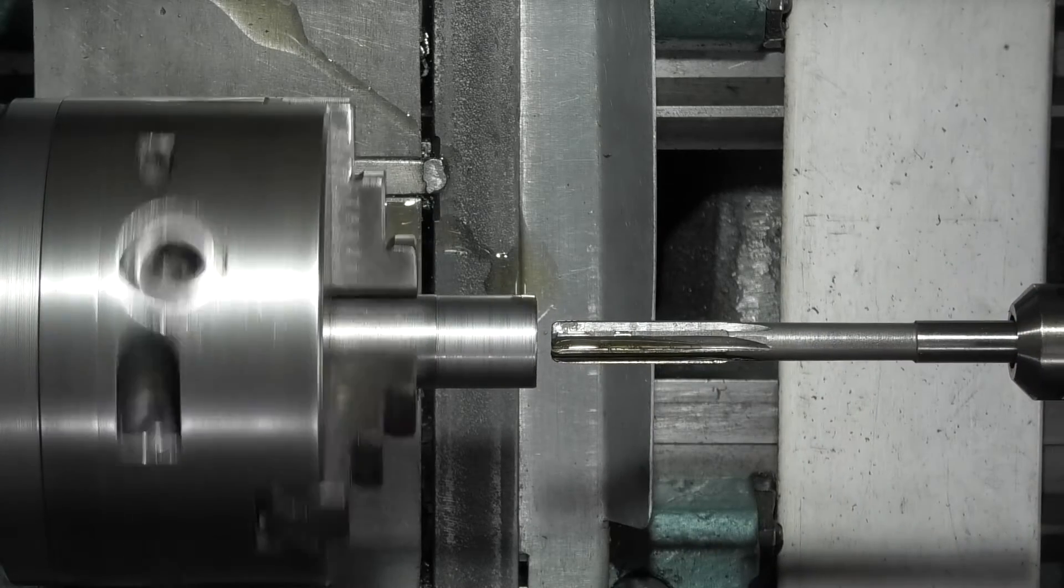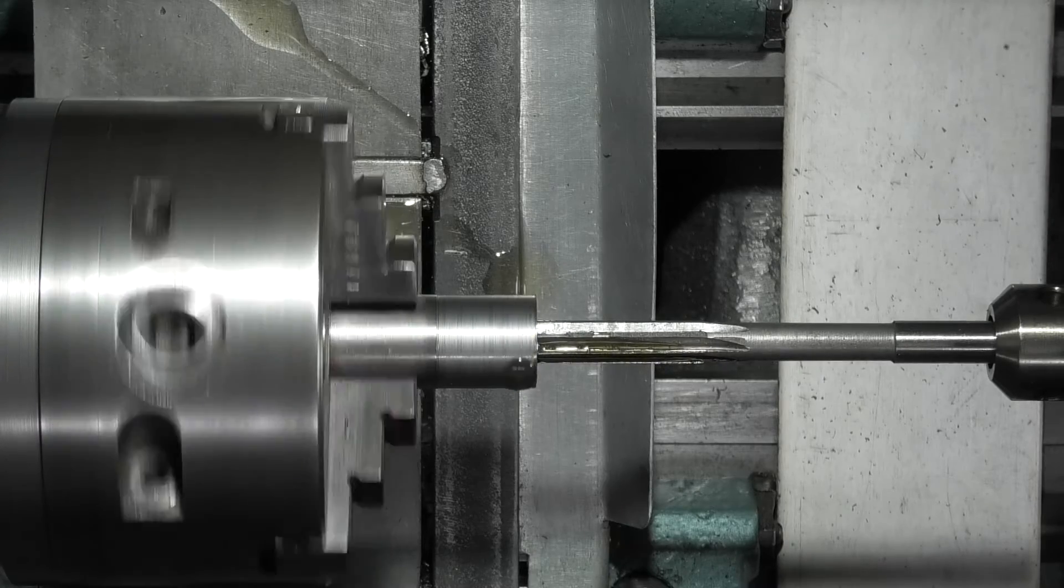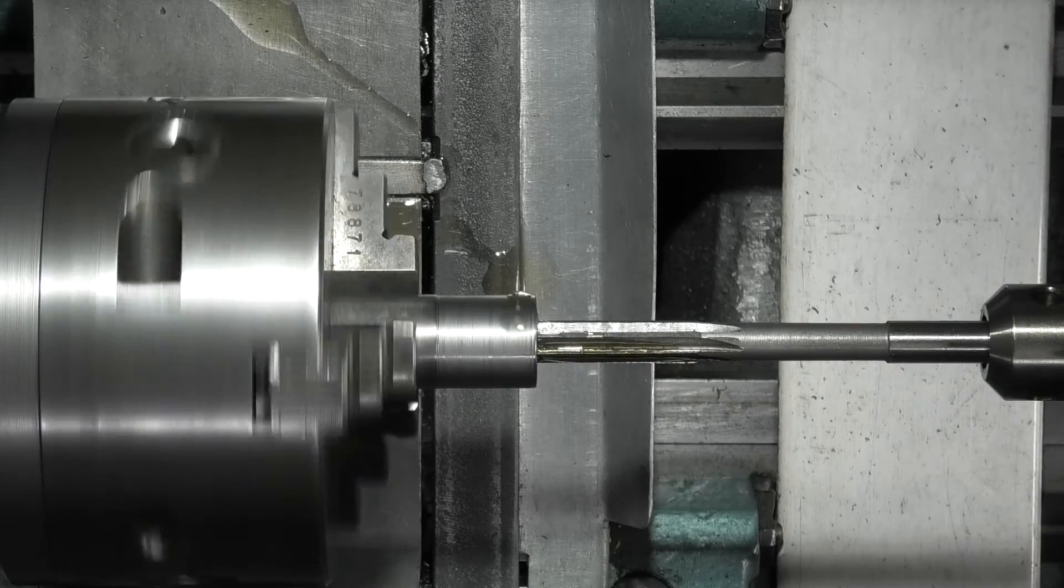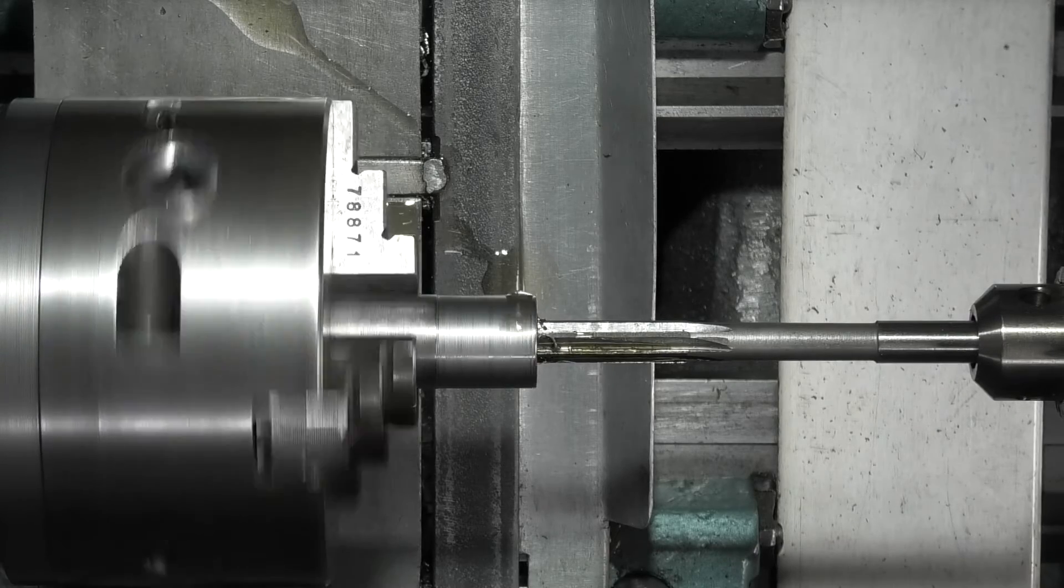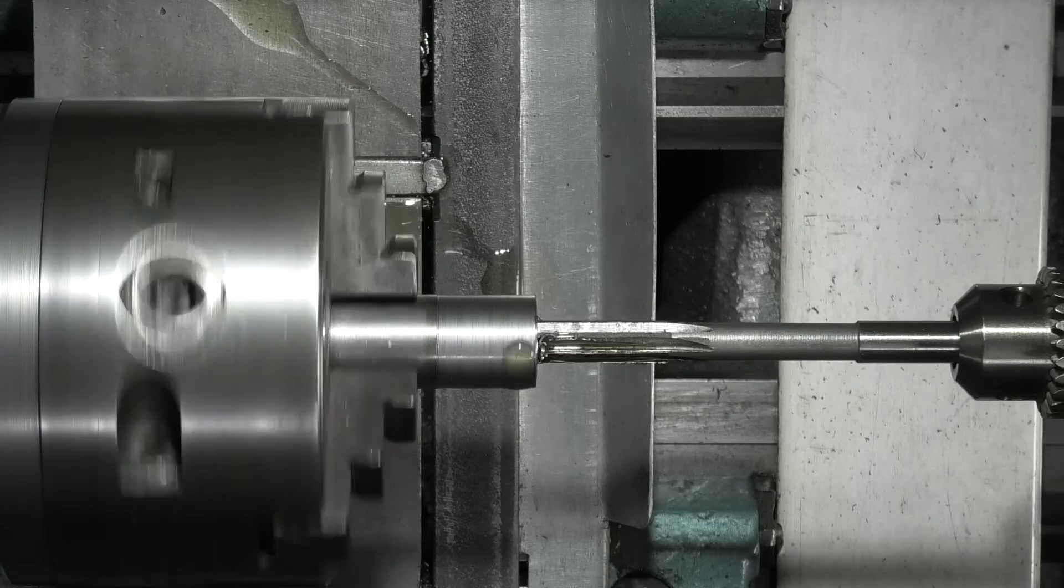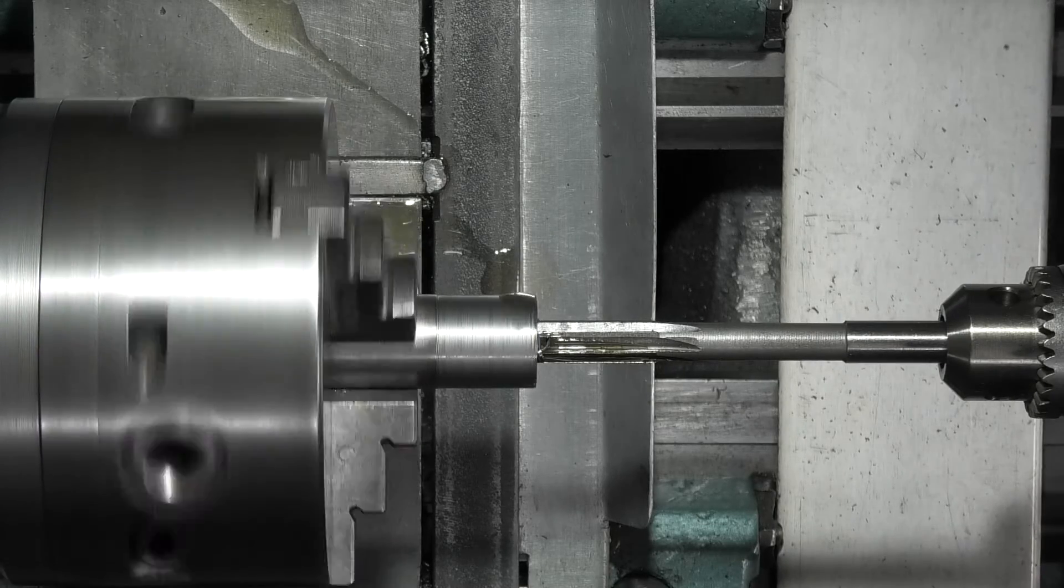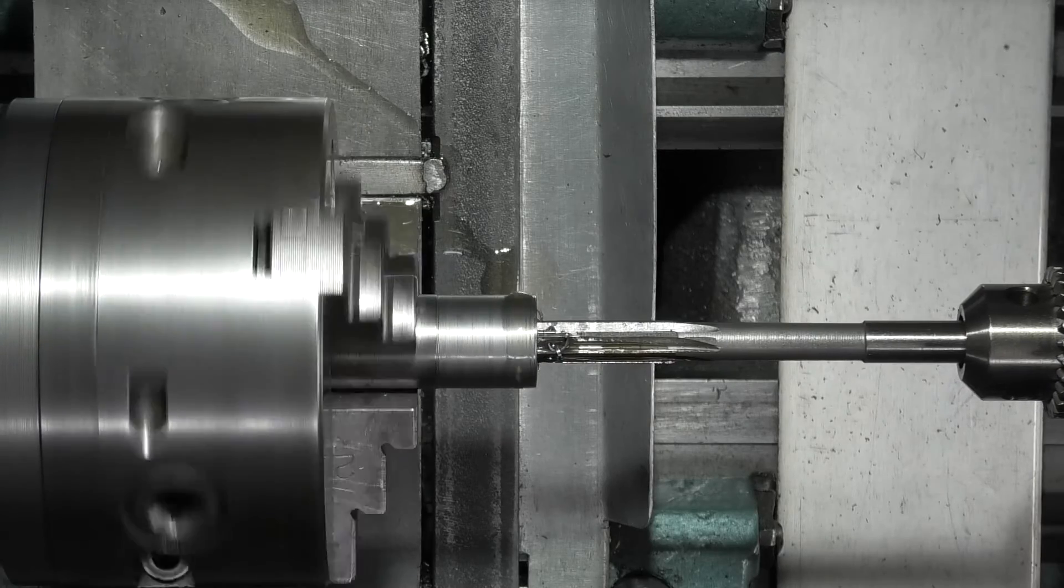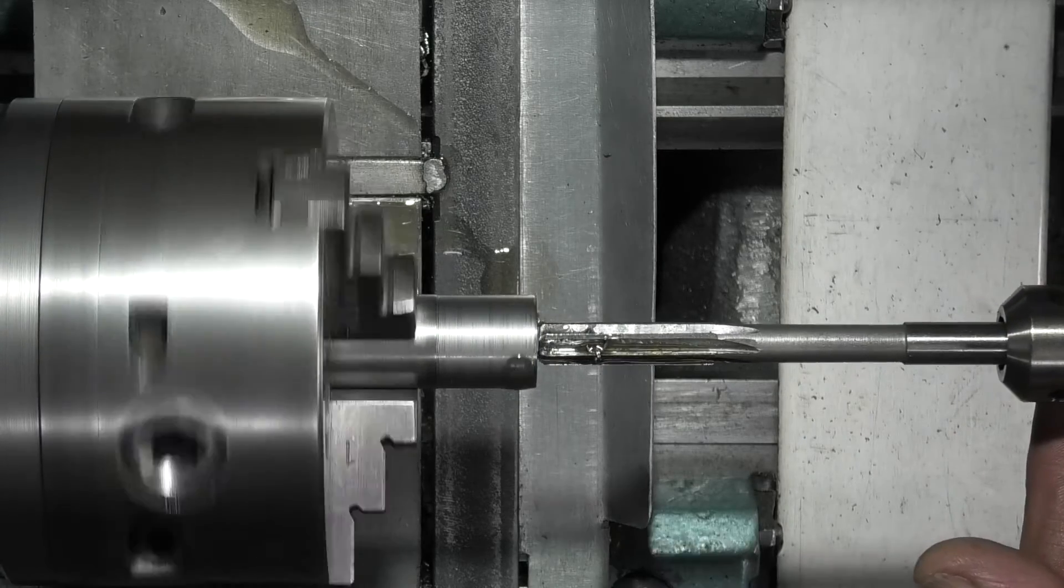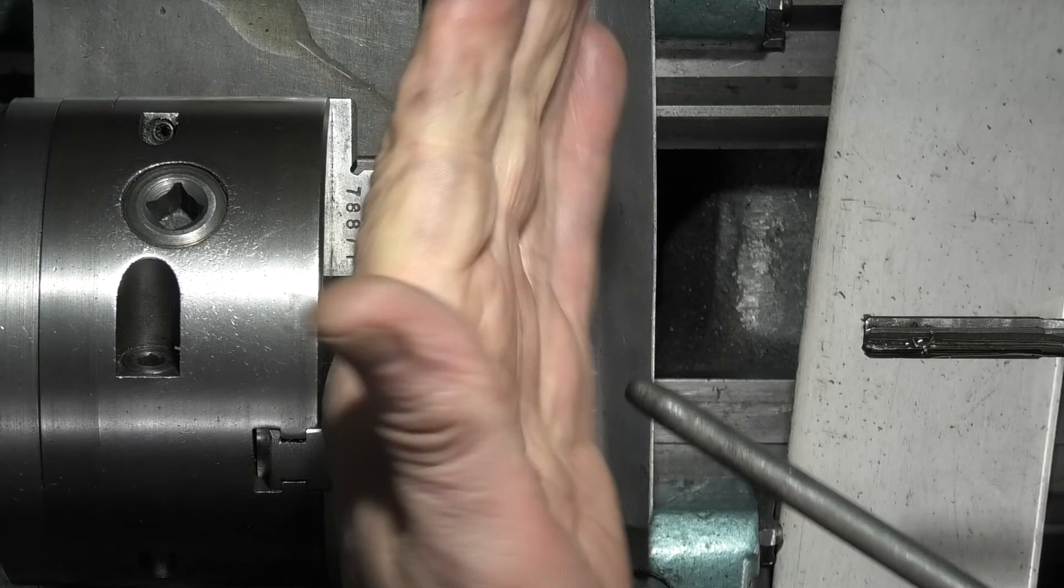Hold the reamer, guide it in, and then just go in 10 millimeters. Stop there, withdraw it, hold the reamer again, take it out. Just clean the bore out.